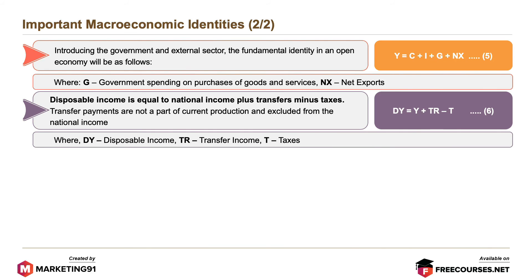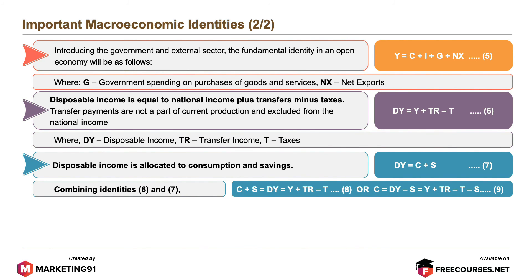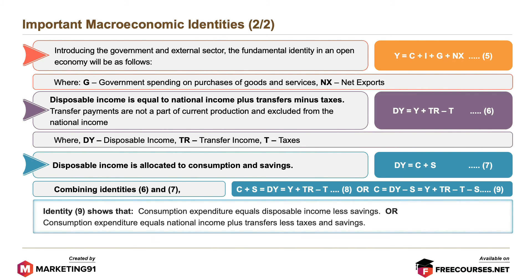Hence, we get DY = Y + TR − T, where DY is disposable income, TR is transfer income, and T refers to taxes. Disposable income is allocated to consumption and savings, that is, DY = C + S. Combining these identities, we get C + S = DY = Y + TR − T, or C = DY − S = Y + TR − T − S. This shows that consumption expenditure equals disposable income less savings, or consumption expenditure equals national income plus transfers, less taxes and savings.